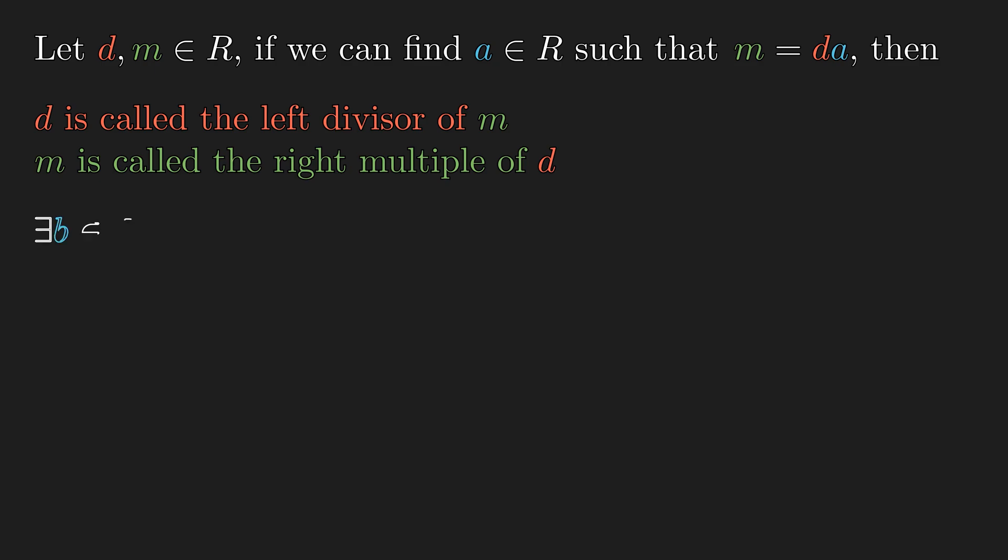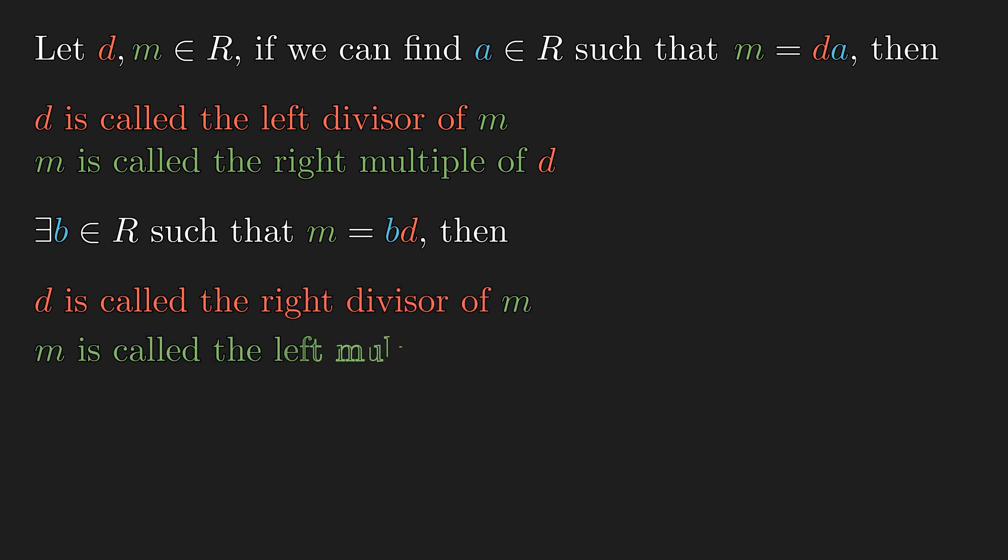Using similar idea, we can define the right divisor and the left multiple as well. In a non-commutative ring, it is possible for an element to be only one-sided divisor of another. For example, this red matrix is a right divisor of the green matrix. However, the same red matrix is not a left divisor of the green matrix.